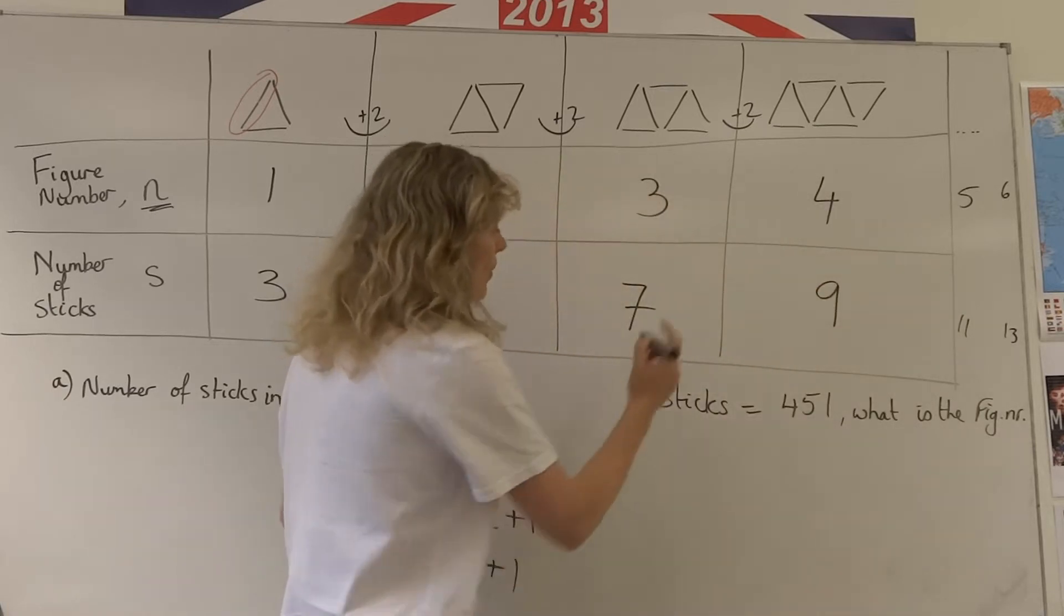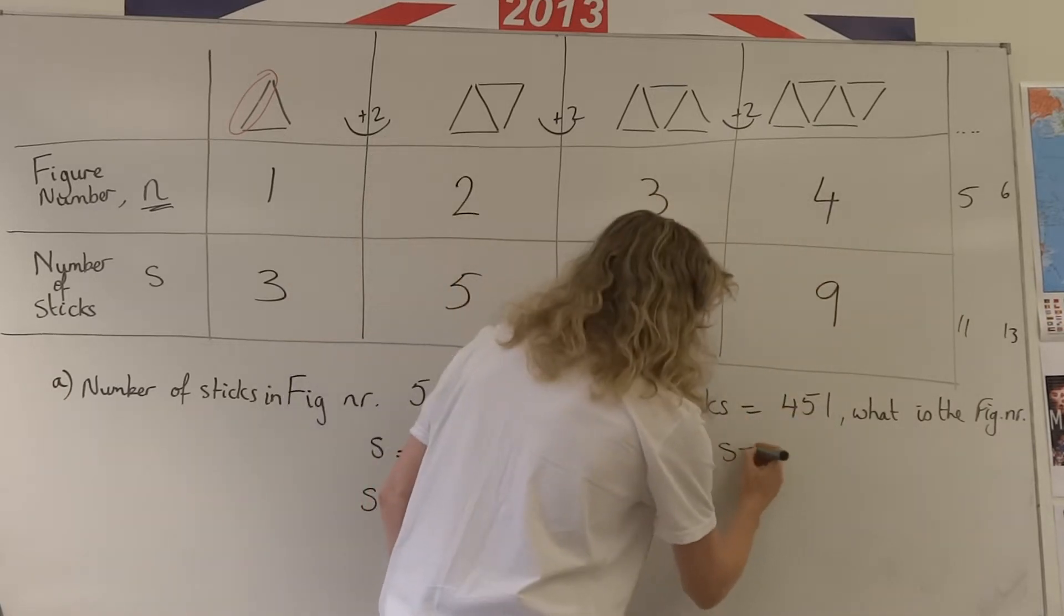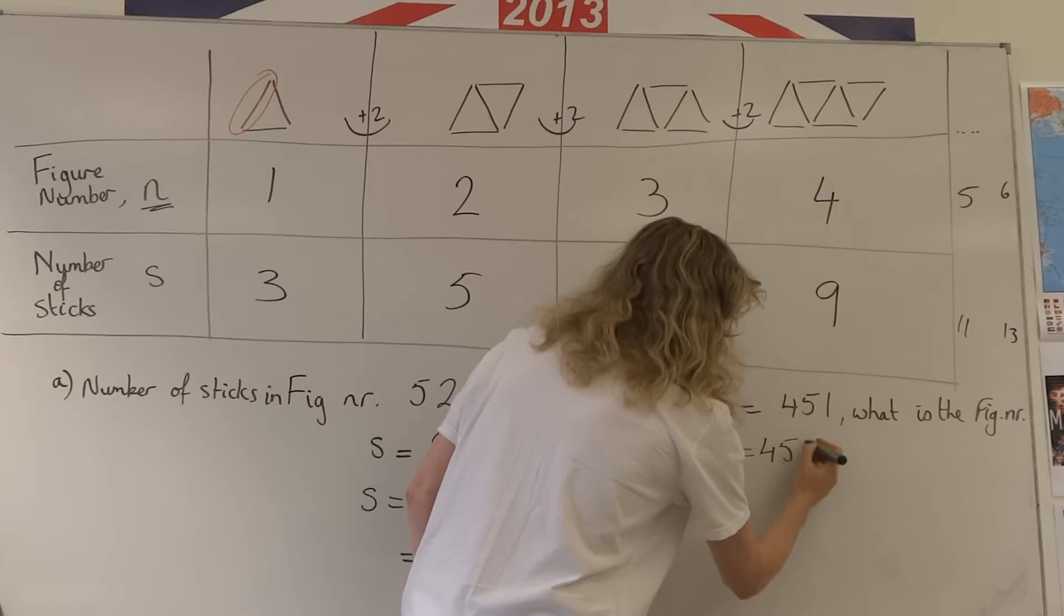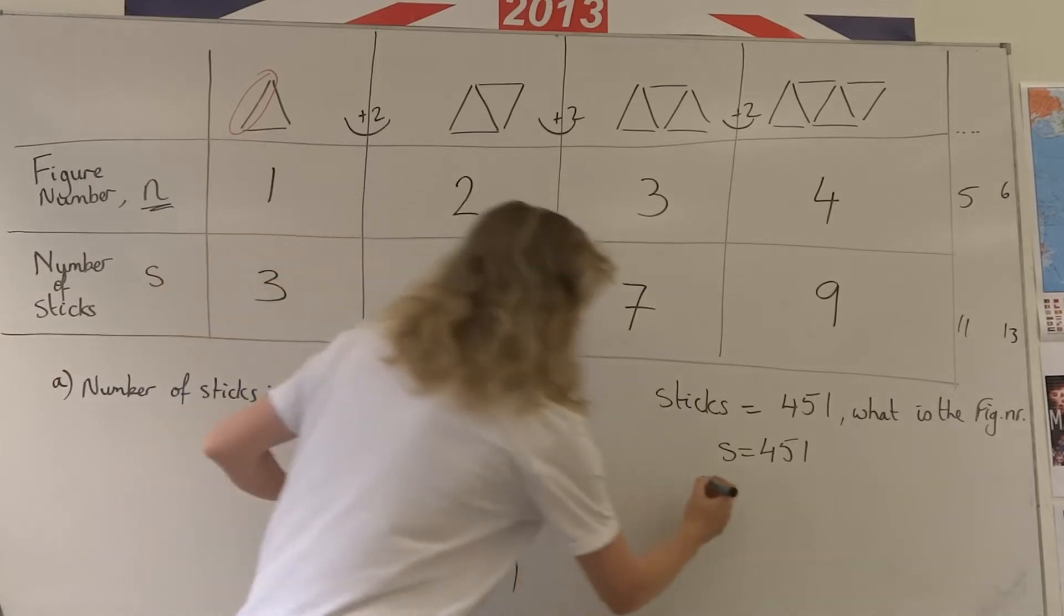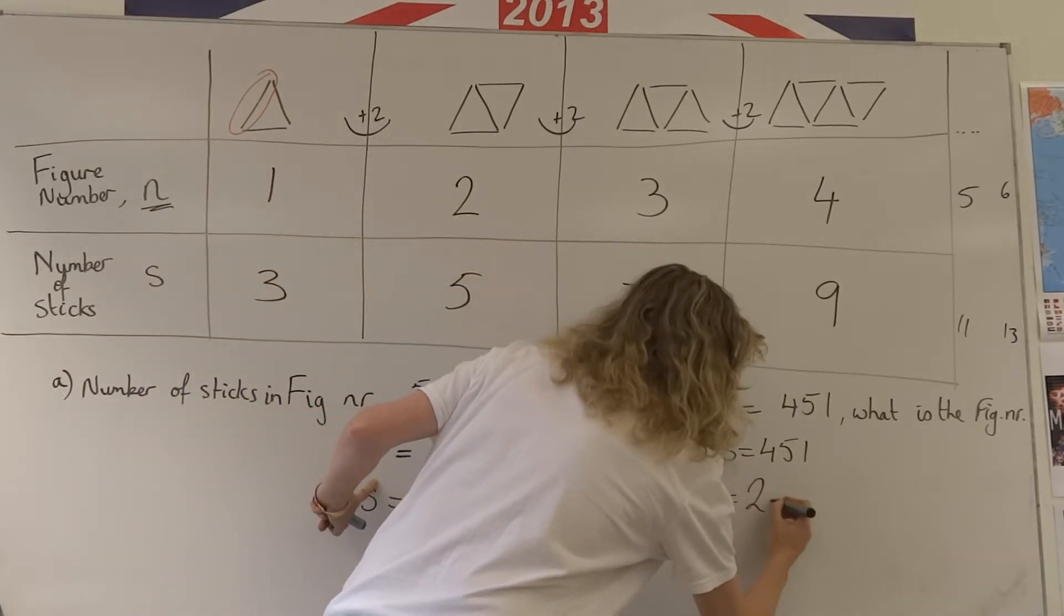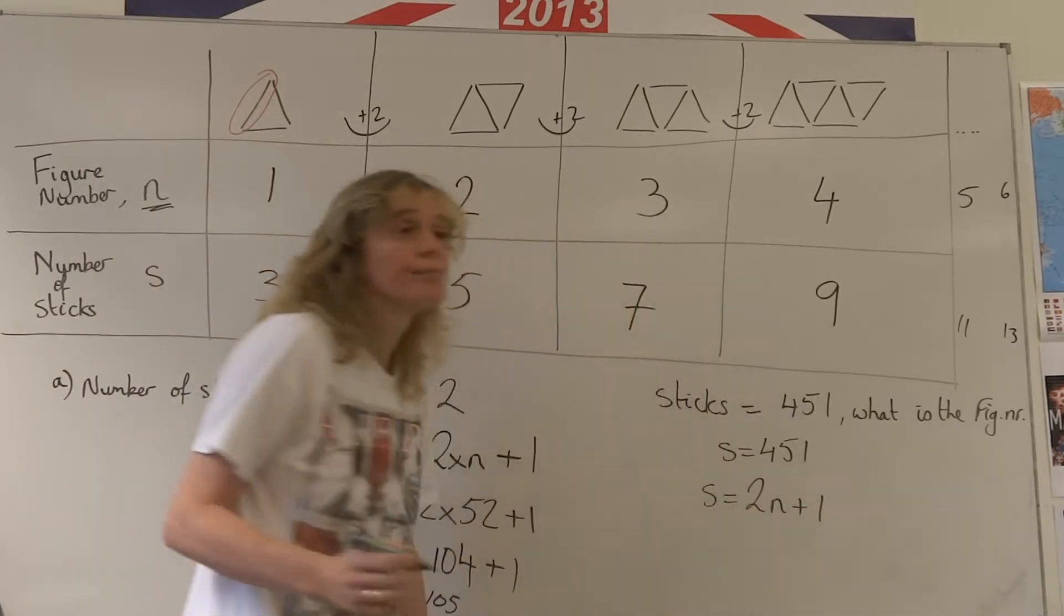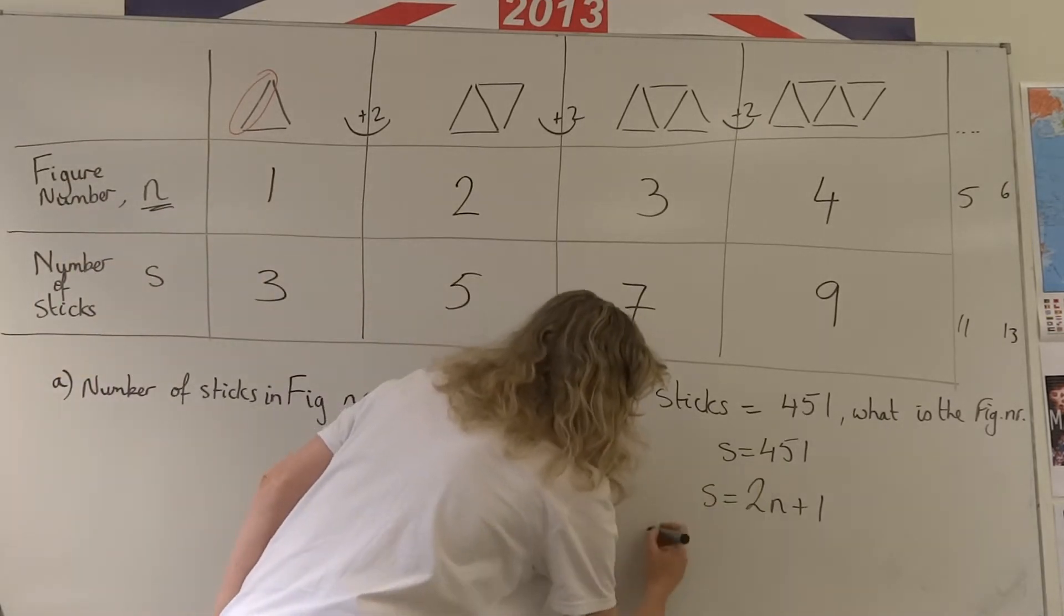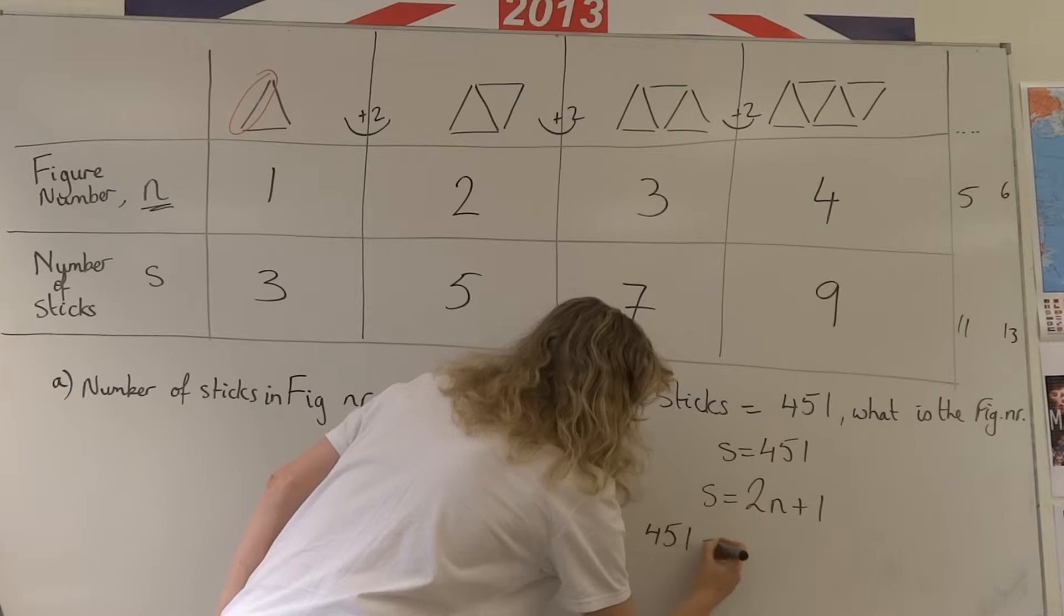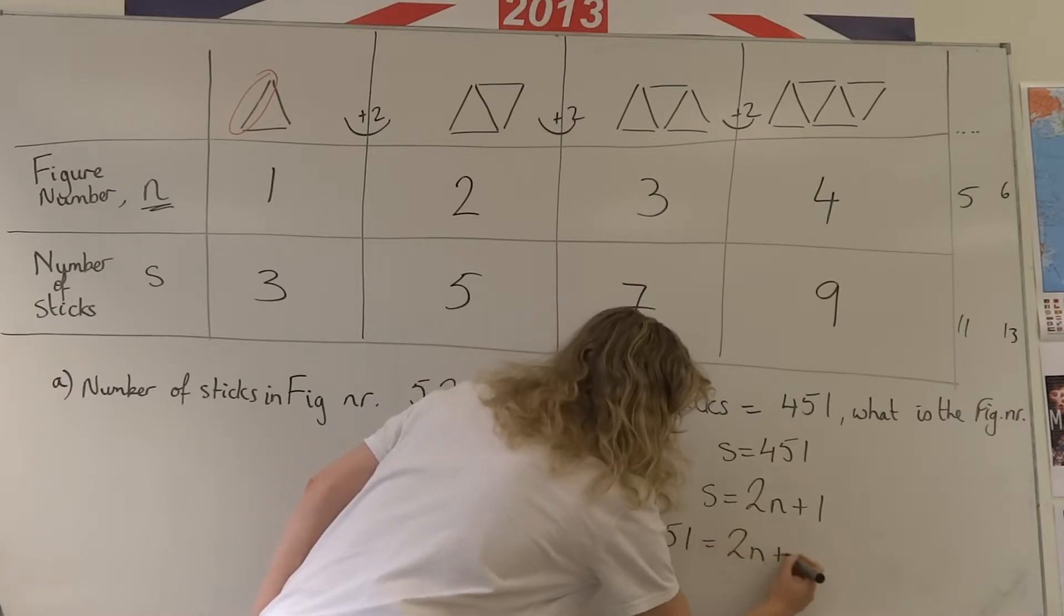Well if we know that sticks is 451 using our algebra skills, we know that s equals 451. We have the formula that s is two lots of n plus one. So we know that 451 is s, 451 is two lots of n plus one.